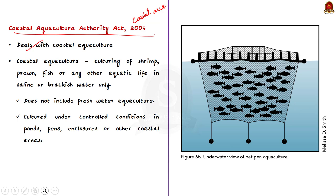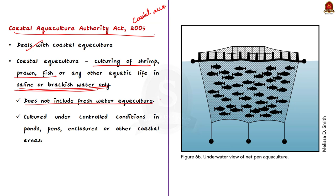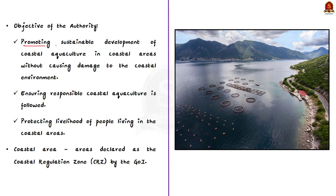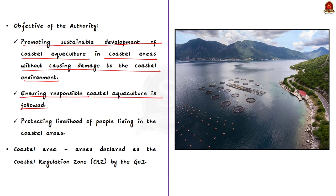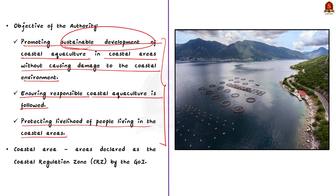As per the Coastal Aquaculture Authority Act, coastal aquaculture is the culturing of shrimp, prawn, fish or any other aquatic life in saline or brackish water only. It covers only culturing in saline or brackish water — it does not cover freshwater aquaculture. The aquatic life is cultured under controlled conditions in ponds, pens, enclosures or other coastal areas. The main objective of the authority is to promote sustainable development of coastal aquaculture without causing damage to the coastal environment, ensuring responsible coastal aquaculture and protecting the livelihoods of people living in coastal areas.